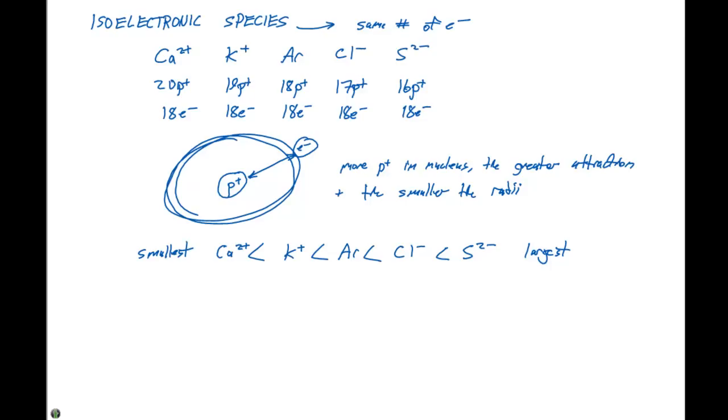And we know that all species have the same number of electrons, but we order them in terms of smallest over to largest. The smallest has the greatest number of protons, whereas the largest has the least number of protons.